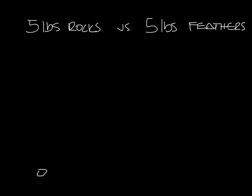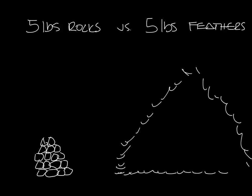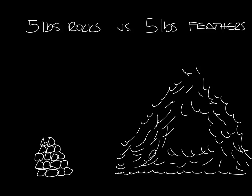But a pound of rocks may look something like this and a pound of feathers might look something like this. So let's cross out versus and say five pounds of rocks equals five pounds of feathers.